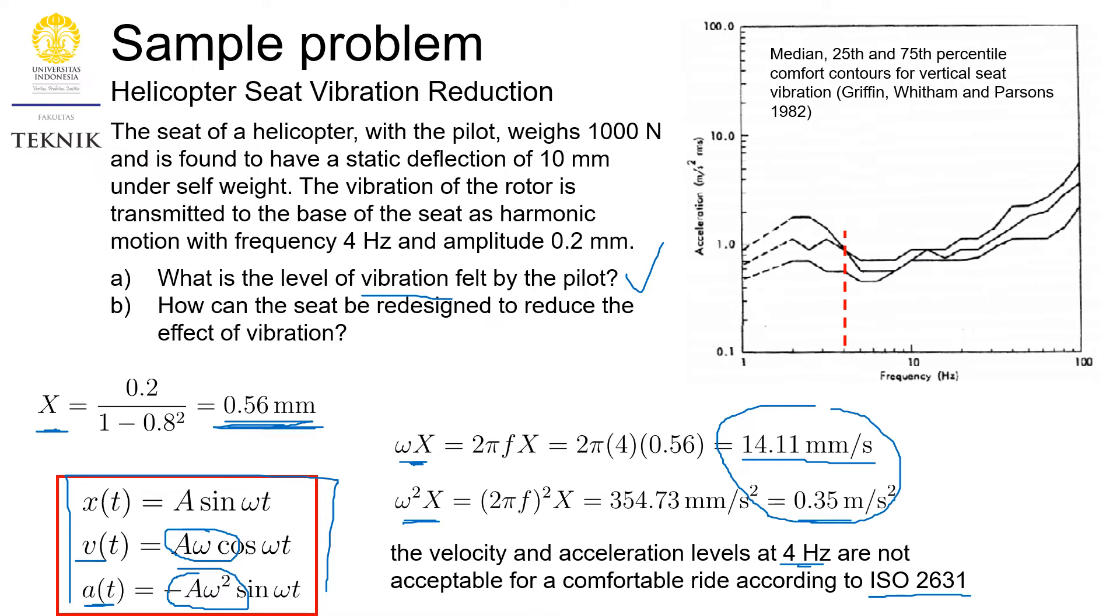We can also see this graph provided by Griffin et al. from 1982 to give you perspective. So this is a graph of frequency and acceleration. If our frequency is 4, this is 4 Hz. The acceptable comfort contours—we need not exceed the acceleration level—should not exceed this contour here. So it says that the maximum is about 0.5 meters per second squared. So it is very close. The value of 0.35 is very close to that of the allowable amount. So that is why we need to redesign this.